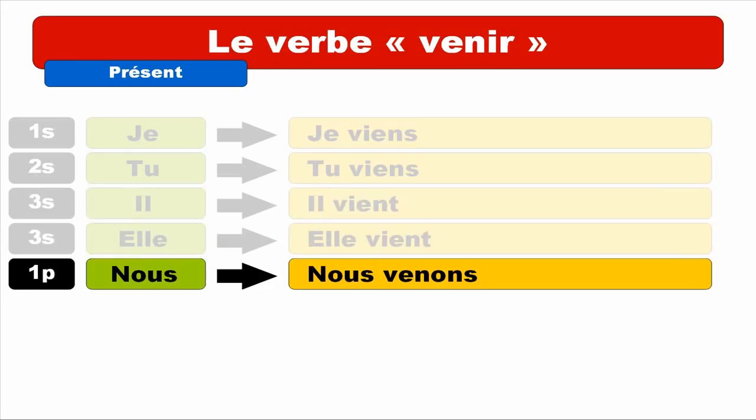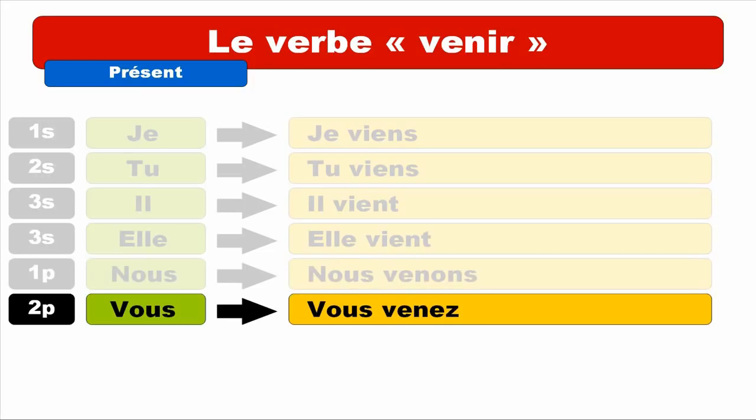Second person of the plural — VOUS. We get VOUS VENEZ. Repeat. VOUS VENEZ. If you look at the form, it ends with E-Z, but when these two letters are combined you get the sound E. It's VE-NEZ. Repeat. VOUS VENEZ.